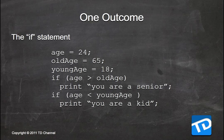Looking at another example — here we have one outcome per test, and we're stringing together two if statements one after the next. We've added a new variable called young_age with a value of 18. The same previous test: if age is greater than old_age, print 'you are a senior.' But also if age is less than young_age, print 'you are a kid.'